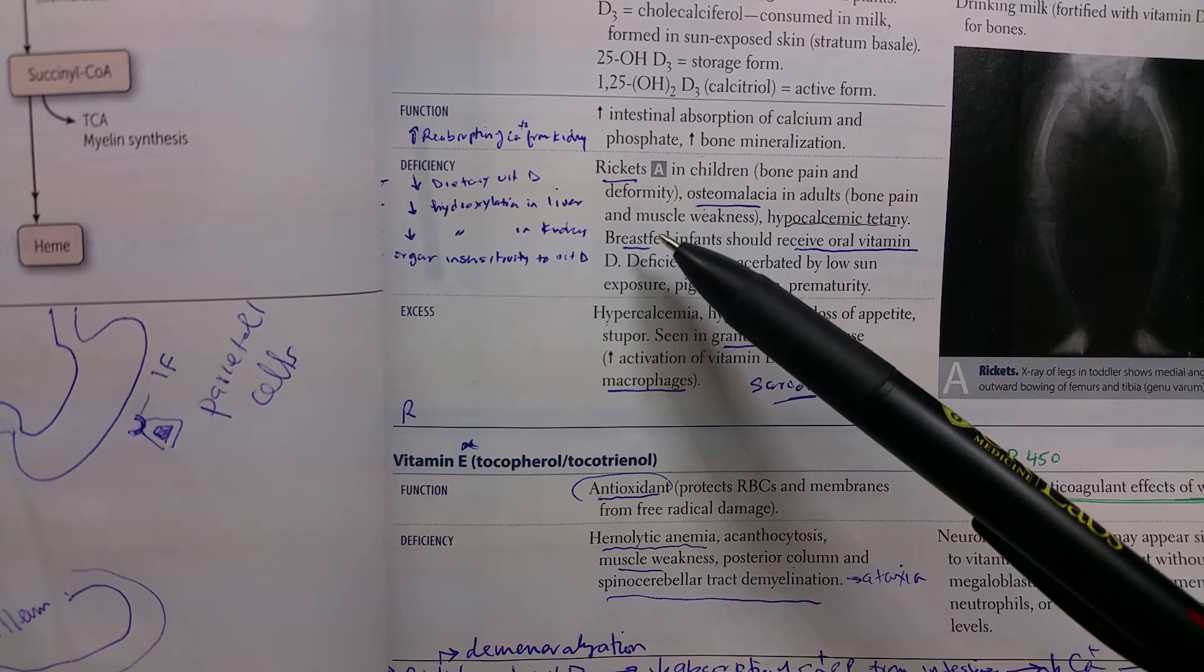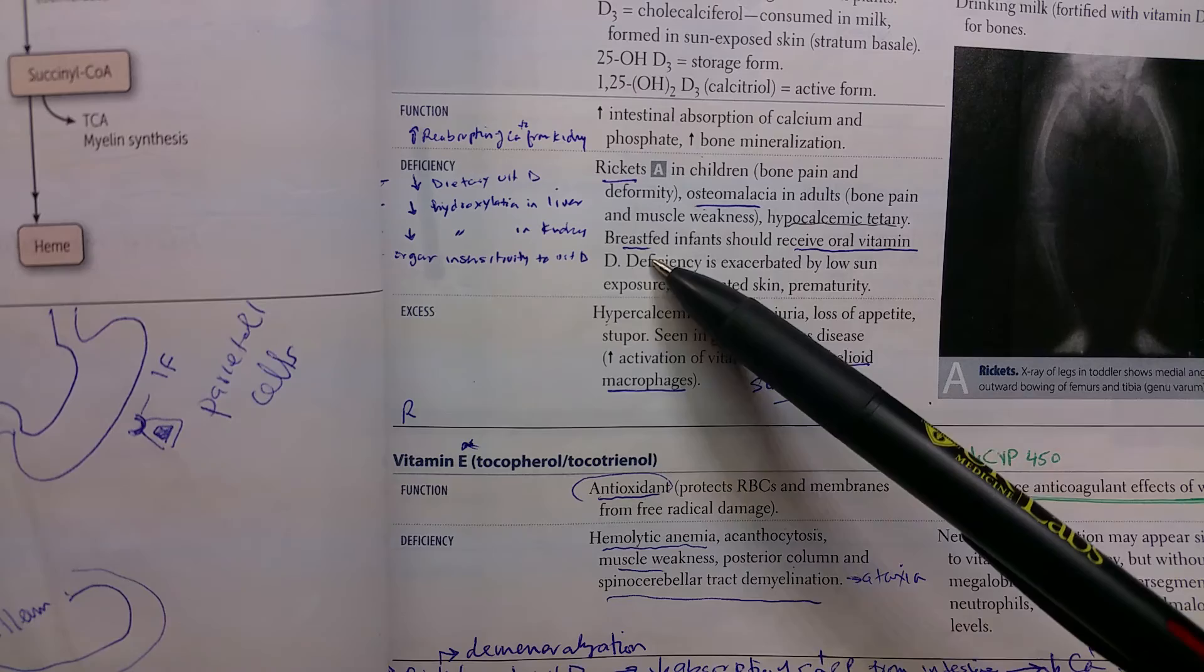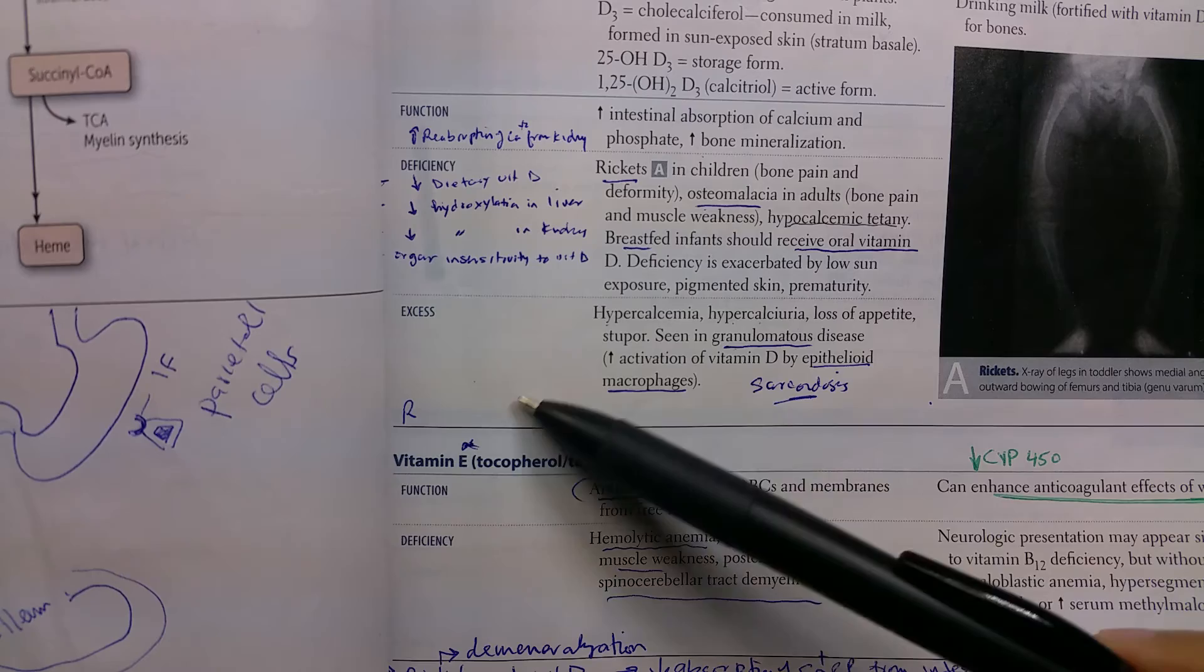We said rickets or osteomalacia in adults. Note that breast milk is not a very good source of calcium, so we give infants who are exclusively breastfed vitamin D supplements.